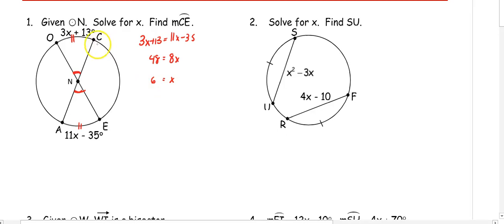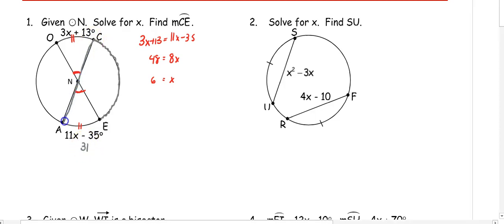It also wants us to find the measure of arc CE. Substituting into either arc: 11 times 6 minus 35 gives 31 degrees. Since CA is a diameter, it creates a semicircle, so the measure of arc CE is 180 minus 31, which is 149 degrees.